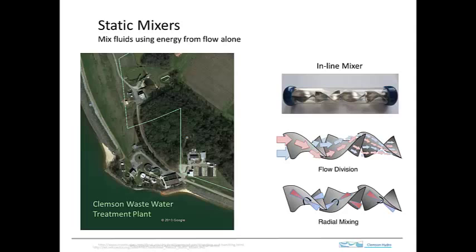We can harness this dispersive process with static mixers and use it to our advantage. This is a simple example of an inline mixer — a piece put in a pipe to create a mixing process. You can see this is like a twisted plate, twisted 180 degrees, and then here's another twisted piece welded onto it and another piece and so on. Particles moving along here — imagine two molecules that are close together.